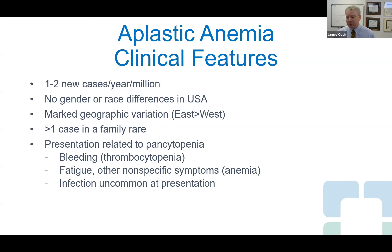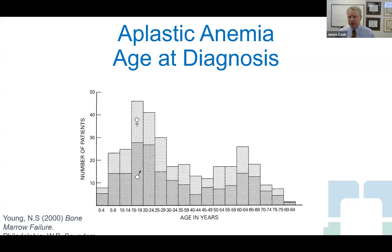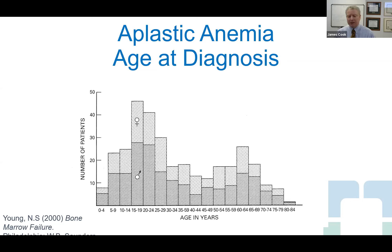Patients can come to medical attention in different ways depending on how low the blood counts are and which cell line is most affected. Some present with bleeding due to low platelet counts. Others have fatigue or other nonspecific symptoms due to anemia. Interestingly, although white cells are often low, it's uncommon to initially present due to infections. There are two distinct age peaks — the bulk of patients are diagnosed relatively young, around ages 15 to 25, and then there's a second peak in patients in their 60s.